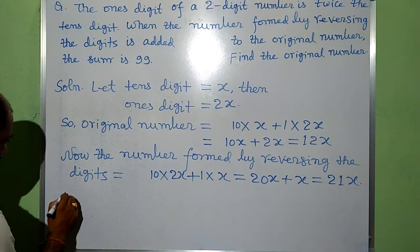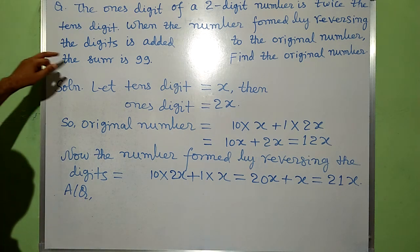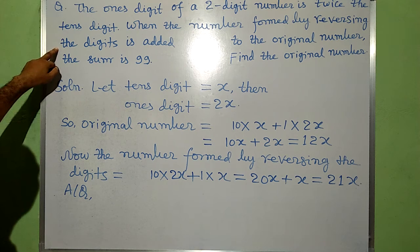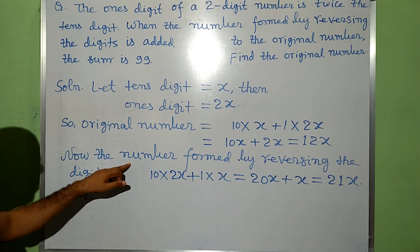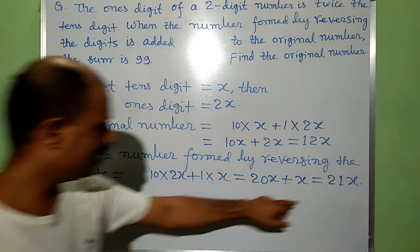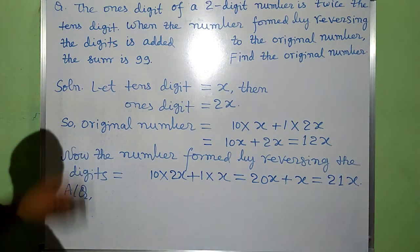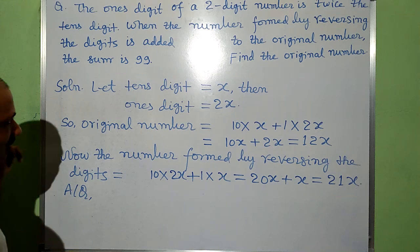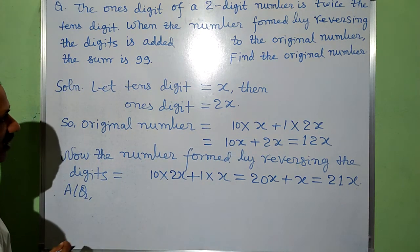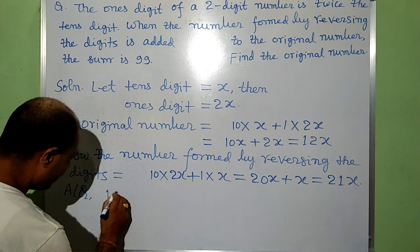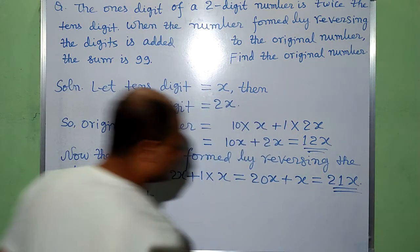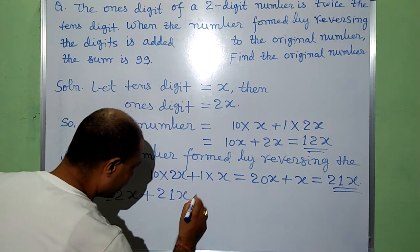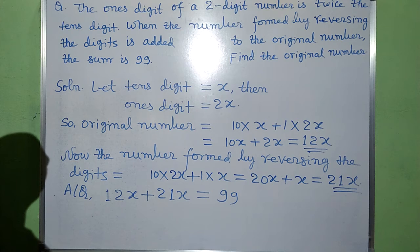According to the question, when the number formed by reversing the digits is added to the original number, the sum is 99. So we add the original number 12x and the newly formed reversed number 21x. The sum is given as 99.